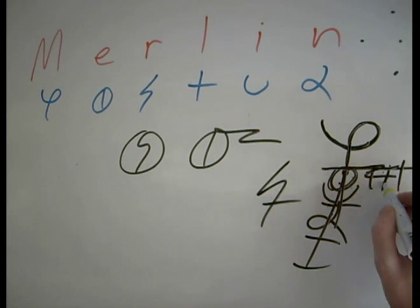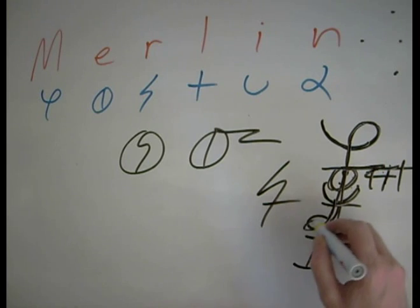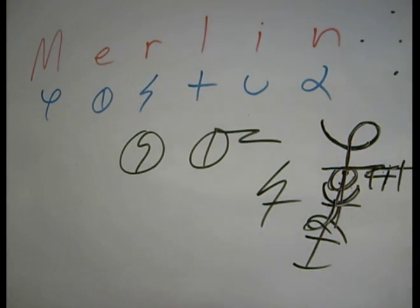M, E, R, L. And then you proceed to the following side chain. I, N. And we've got the name Merlin. That's how side chains work.